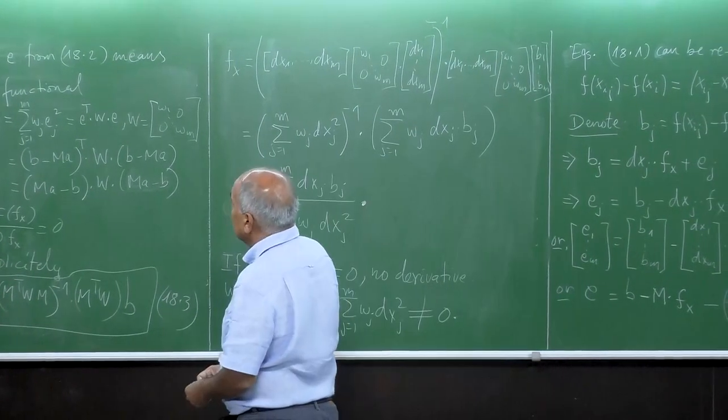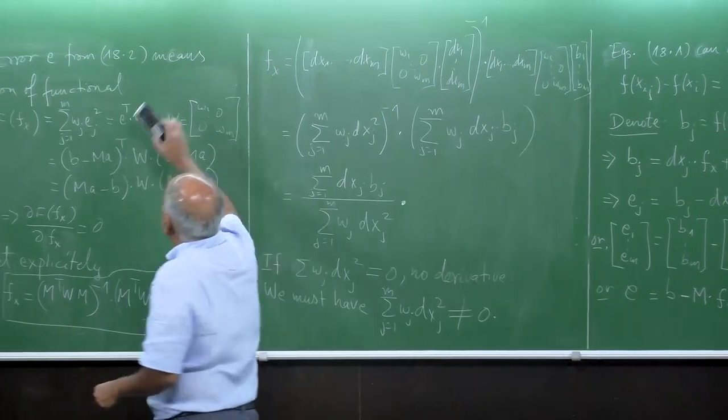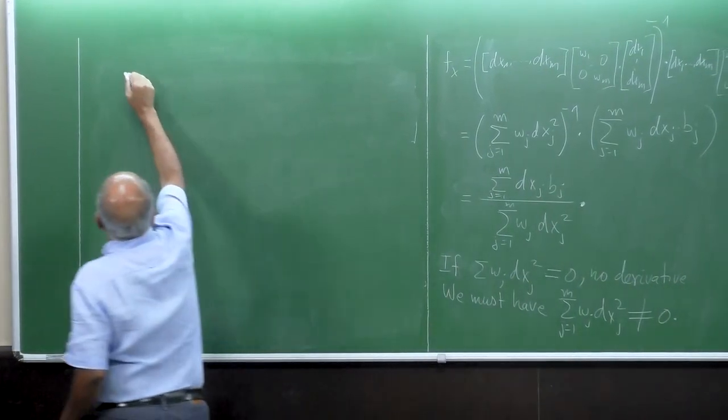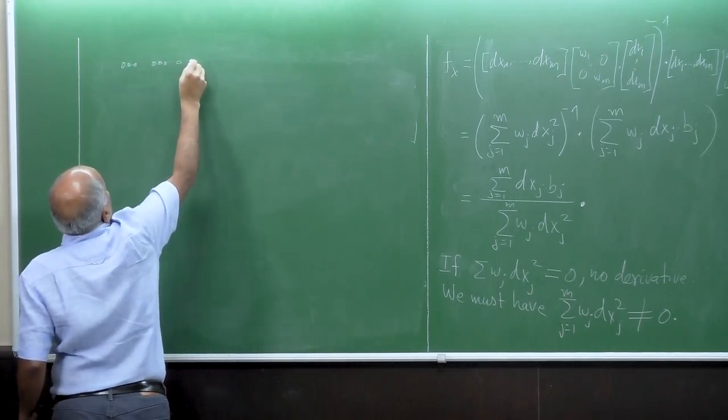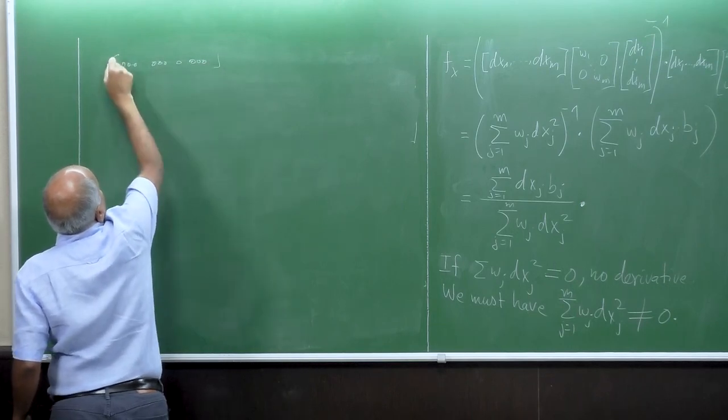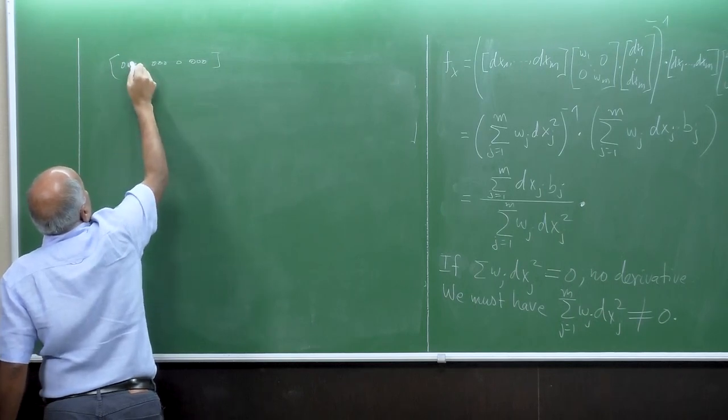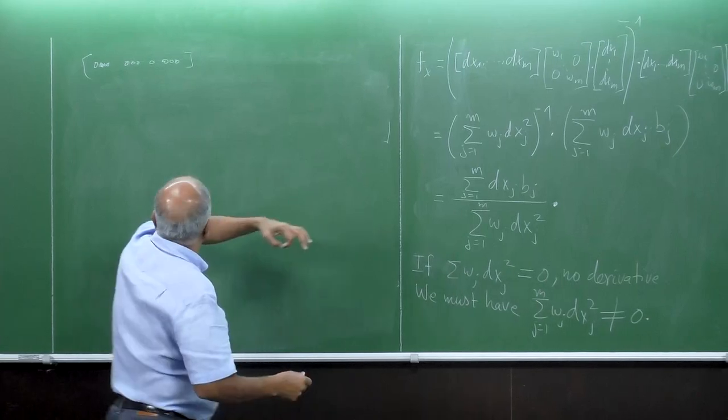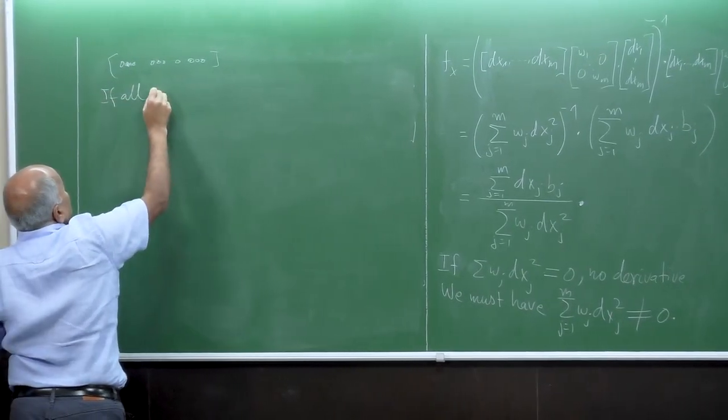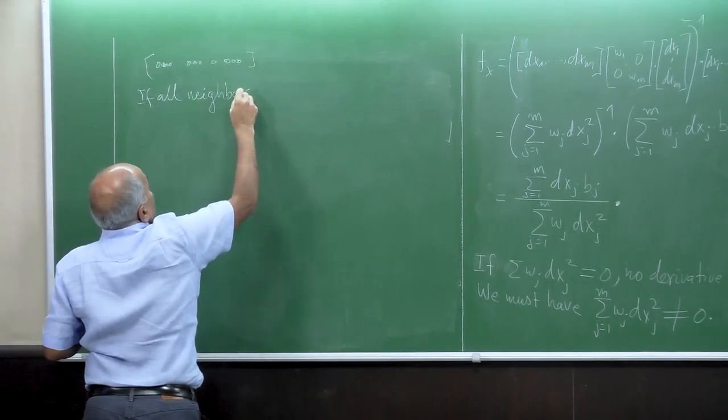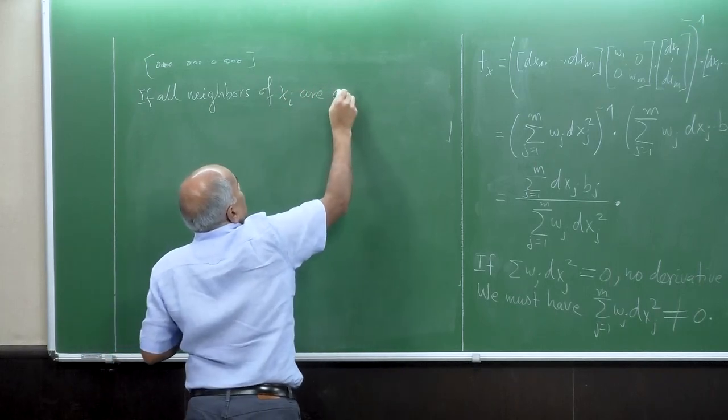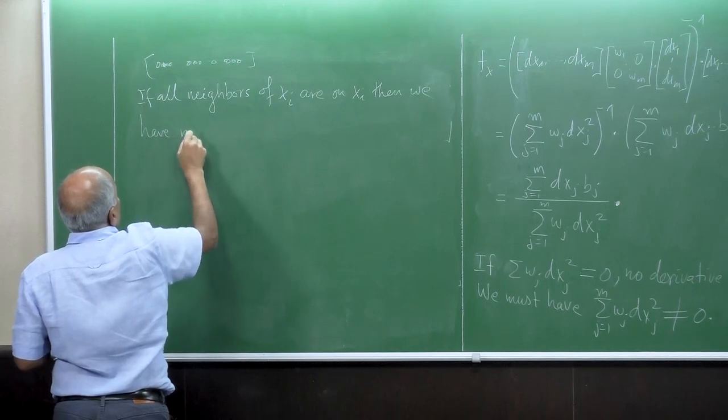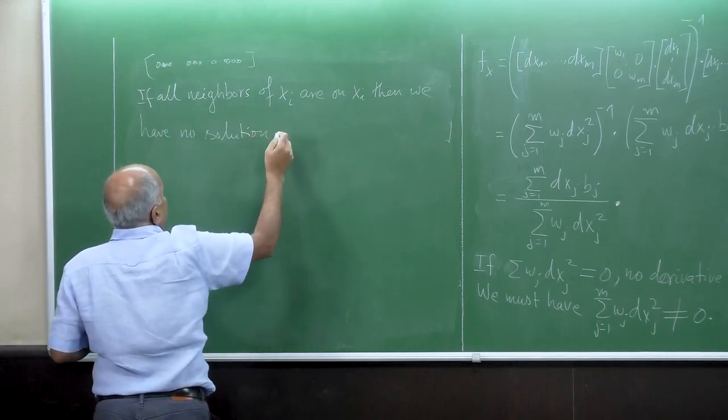When we get a first order derivative, if the denominator, the summation of WJ*DXJ squared, is equal to zero, then no derivative. We must have summation of WJ*DXJ squared not equal to zero. So when is it zero? If all of the XI are on XI, then we have no solution, means no derivative.